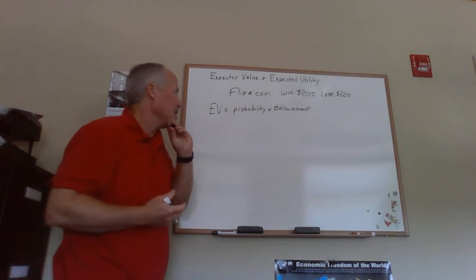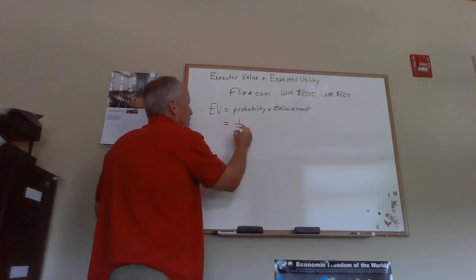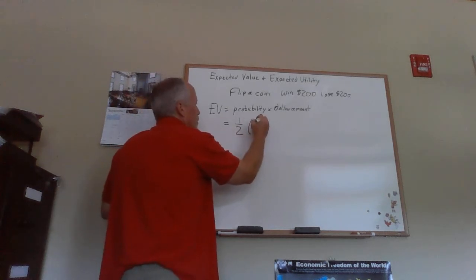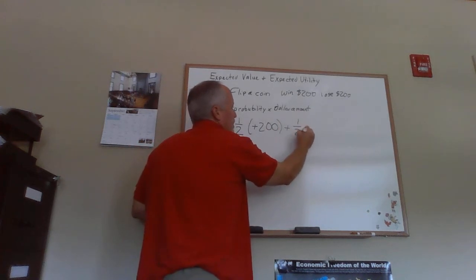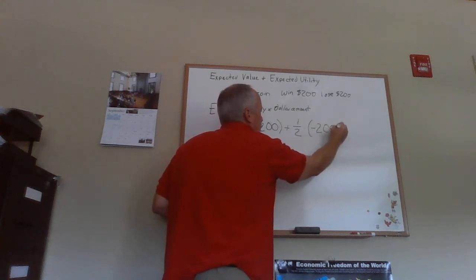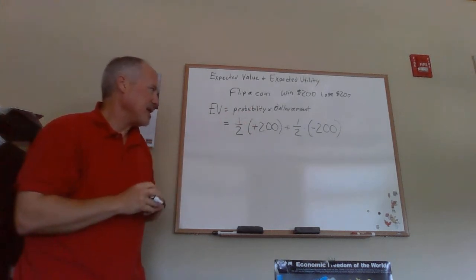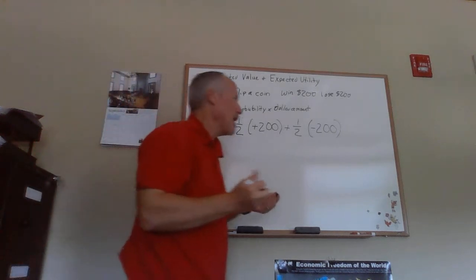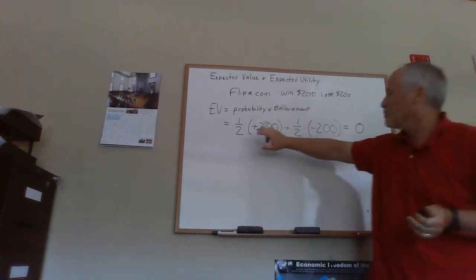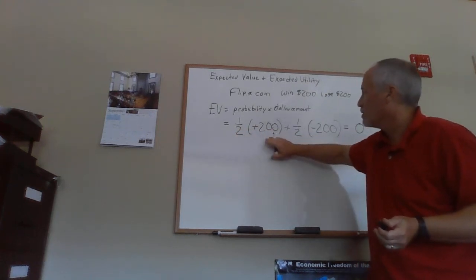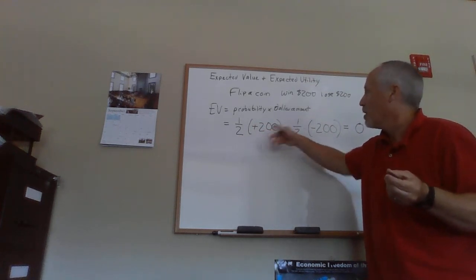Take the coin flip example: you could win $200 or lose $200. With a fair coin, the probabilities are one-half each. So the expected value is (1/2) × (+$200) + (1/2) × (−$200), which gives an expected value of zero. The key idea is you multiply the probability of each outcome by that dollar amount and add them up.